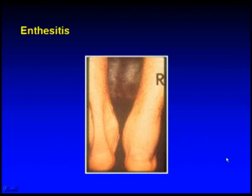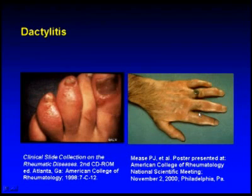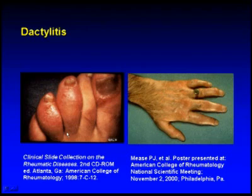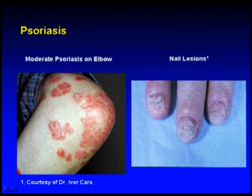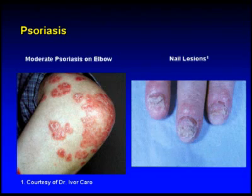Here is a slide showing dactylitis, which is a sausage-shaped digit — you can see how the index finger looks more like a sausage. This manifestation can be seen in any of the subtypes of spondyloarthritis. Here is dactylitis in the toe, with the third and fourth toes affected, and you can also see nail involvement typical of psoriatic arthritis. Here is a slide of psoriasis showing plaque-like lesions on the elbow with inflammation and erythema, and nail involvement showing thickening, scaling, and lifting of the nail off the nail bed.